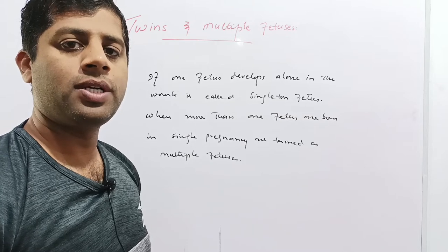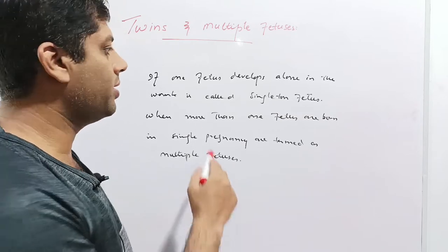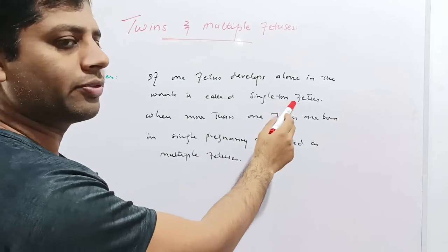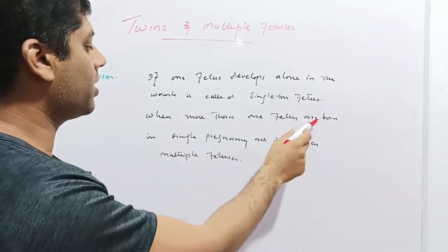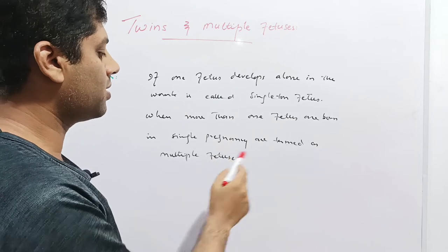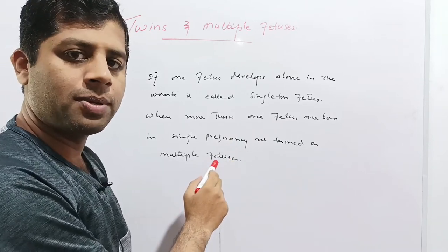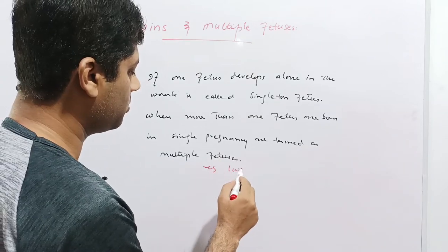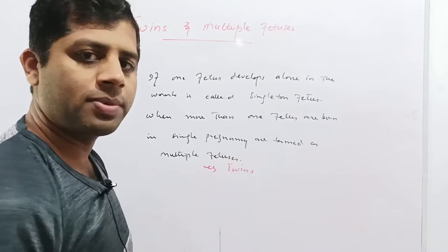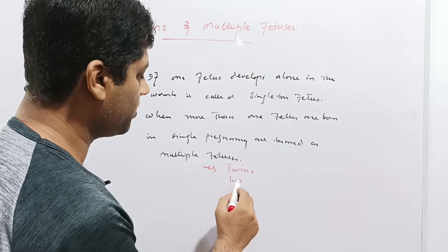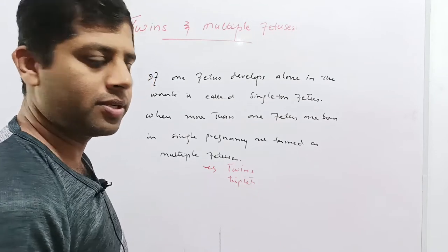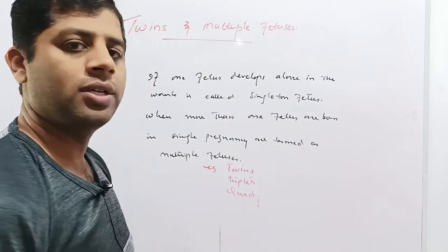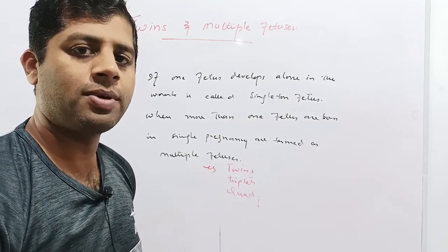The next component of our topic is multiple fetuses. If one fetus develops alone in the womb it is called a singleton fetus, and when more than one fetus is born in a single pregnancy these are termed as multiple fetuses, multiple births, or multiple pregnancies. For example: twins in which two fetuses are born, triplets in which three fetuses are born, quads in which four fetuses are born, and so on.